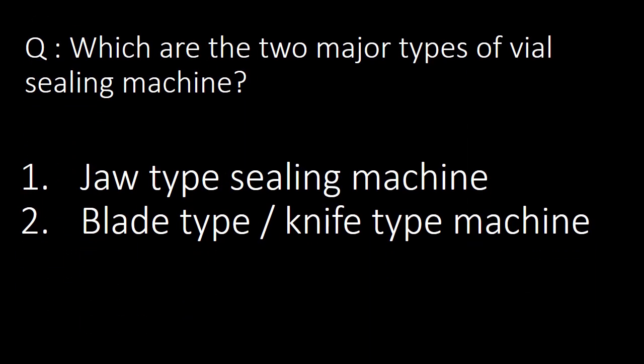This is a very basic question: which are the two major types of vial sealing machines? Vial sealing machines are of two types: jaw type sealing machine and blade type or knife type vial sealing machine.